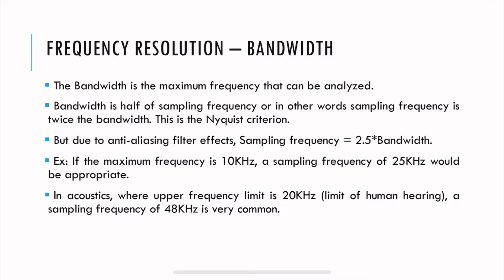Now let's talk about frequency resolution. Bandwidth is the maximum frequency that can be analyzed. Bandwidth is half of the sampling frequency, or sampling frequency is twice the bandwidth — this relation is called the Nyquist criterion. However, due to anti-aliasing filters, the sampling frequency should actually be 2.5 times the bandwidth. For example, if the maximum frequency of interest is 10 kHz, we need a sampling frequency of 25 kHz. In acoustics, dealing with frequencies from 20 Hz to 20 kHz, a sampling frequency of 48 kHz is very common.